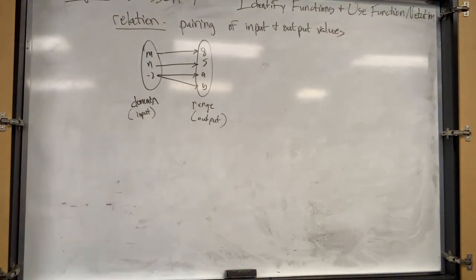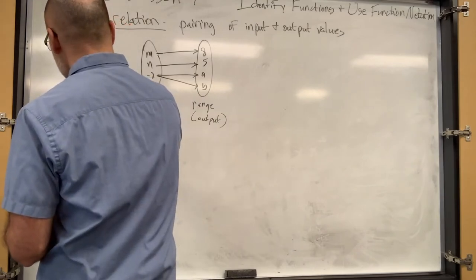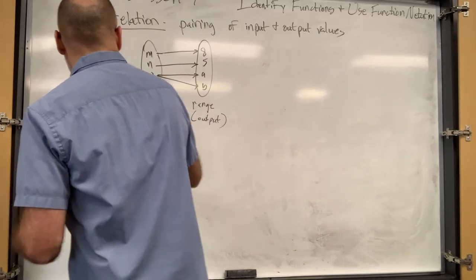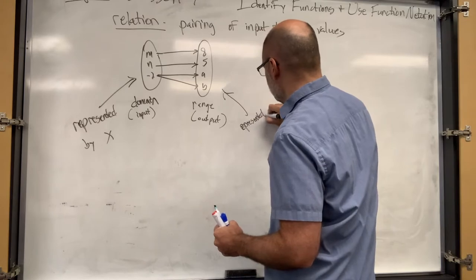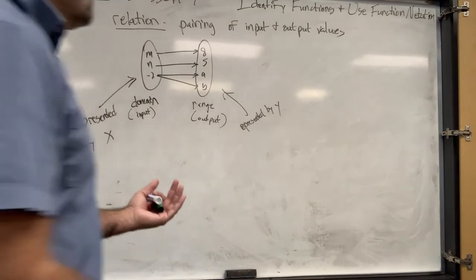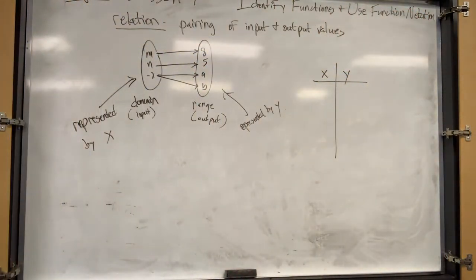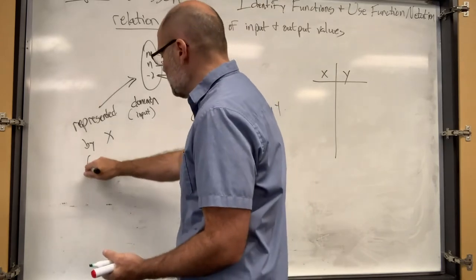So the domain is what you put into it, the output is what you get out of it. The input value, normally x, is the independent variable - represented by x in a linear equation - and the output is represented by y most of the time, but not in function notation. You could see your values expressed like this in an x and y chart.